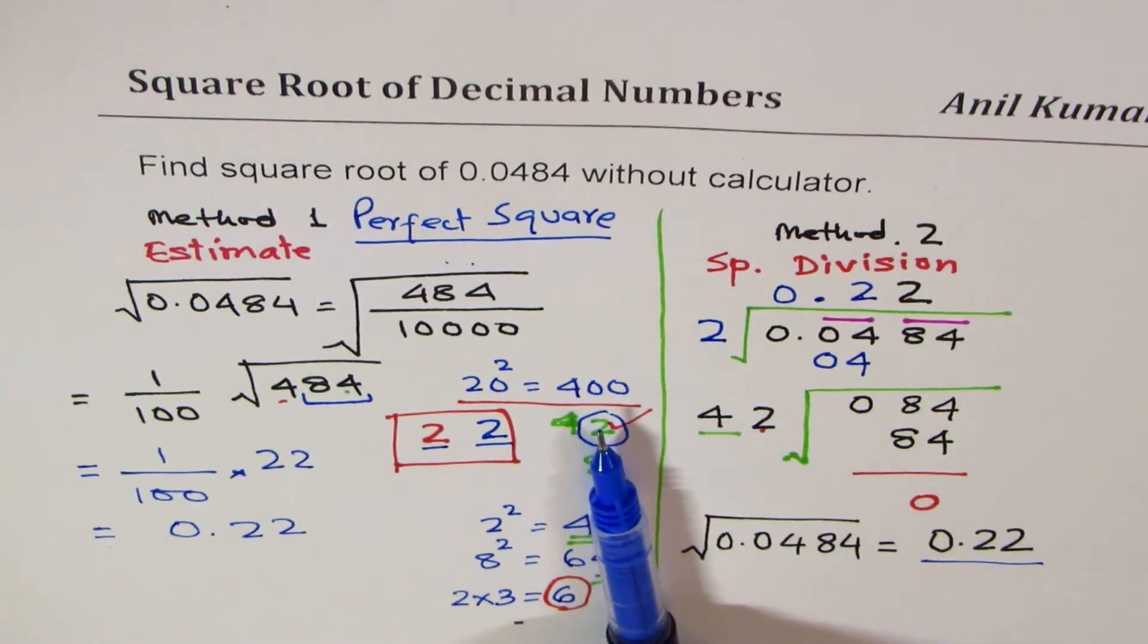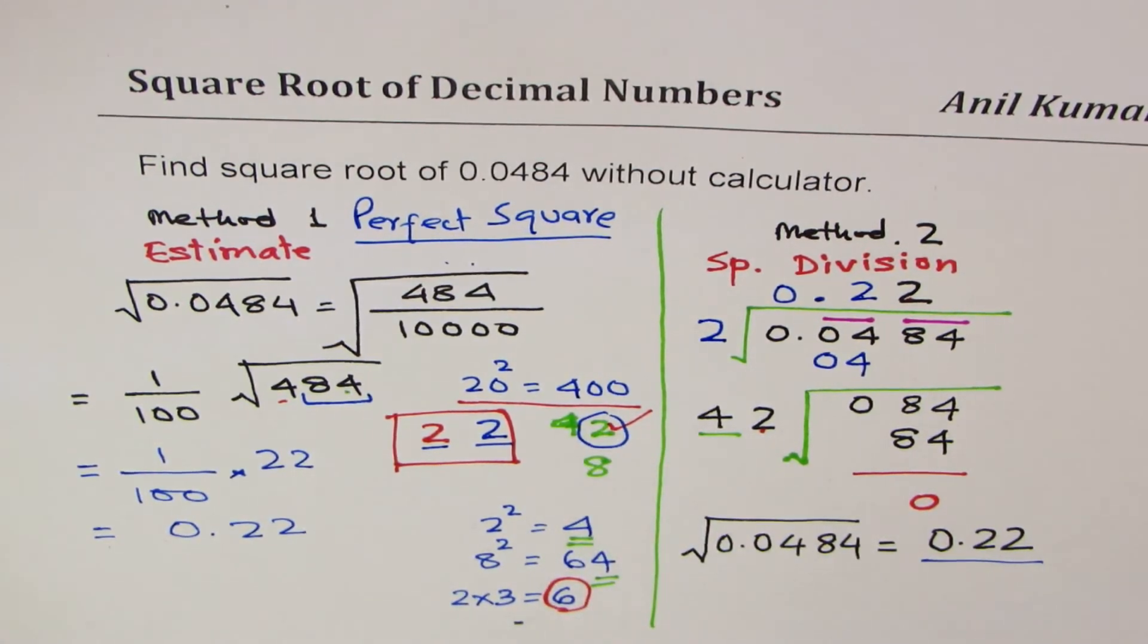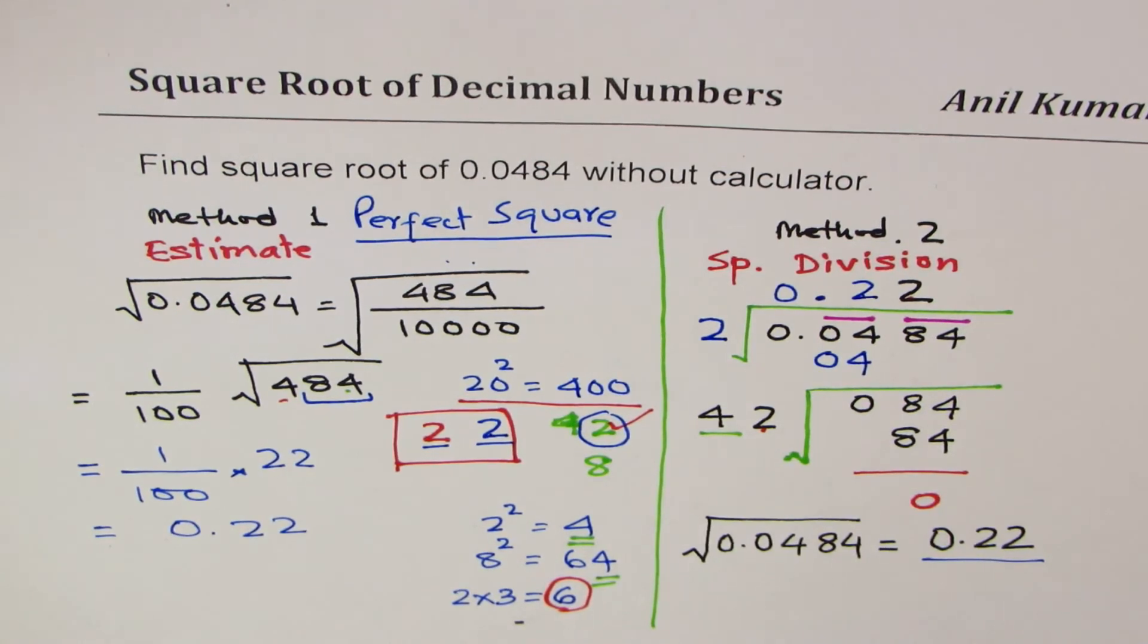Once you know these tricks, it is really easy to figure out what is the square root. I'll provide you with the links which will discuss this method in detail. I was giving you it in short. Here is a square root method, special division, which you can adopt for any number. It may or may not be a perfect square.